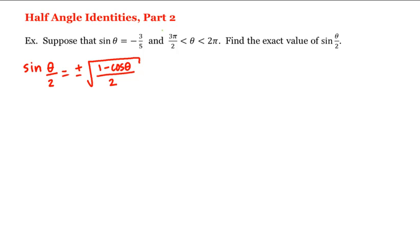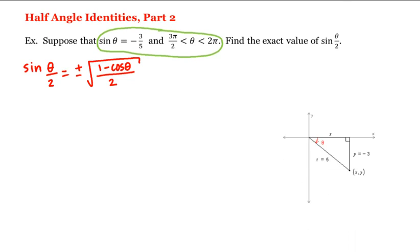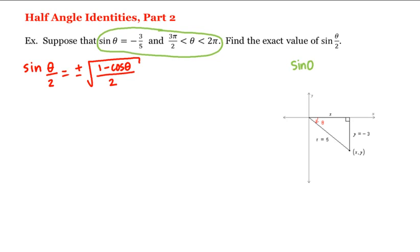We're given that sine of theta is negative three-fifths and that theta is between three pi halves and two pi. Therefore, we can draw the following triangle. Remembering that sine of theta is equal to y divided by r, and if this is negative three-fifths, we put the negative with the y because y's are negative in quadrant four and r is always positive.